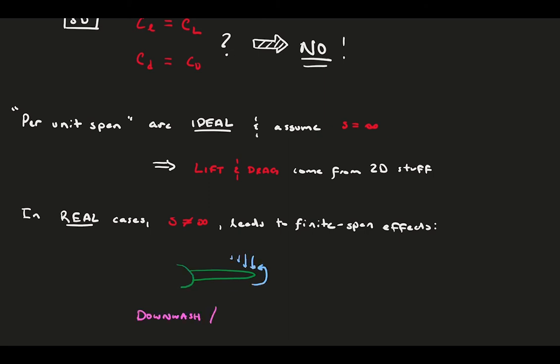Today, our focus will be on the tip vortex and the downwash it produces, which leads to a change in the effective angle of attack and adds induced drag.